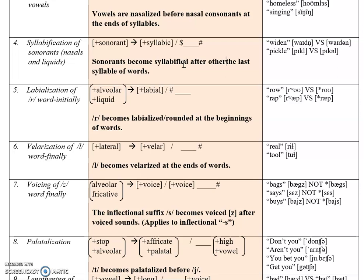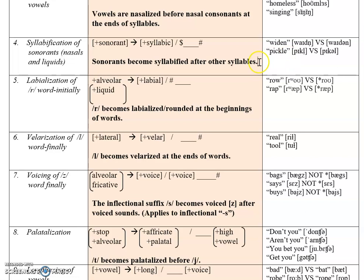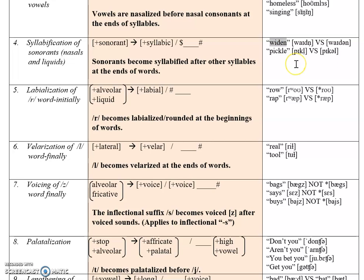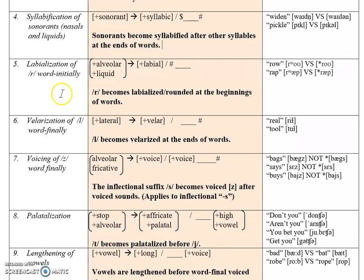For example, the word 'widen' — you could hyper-articulate it, but the /n/ sound doesn't need a vowel, and so we indicate it is its own syllable by putting a small dot underneath it: 'widen' is its own syllable. The same applies to 'pickle,' where the /l/ itself is its own syllable.